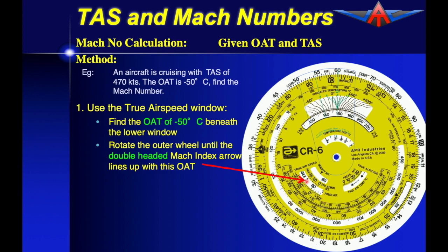This double headed Mach index arrow is the one that must be aligned against the negative 50 degrees. We now use the outer scales to actually do the calculation.